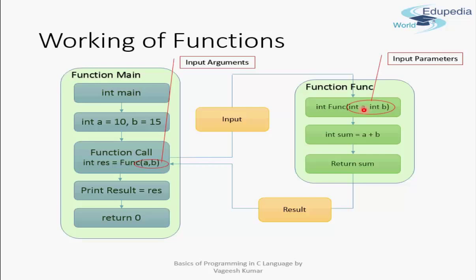This is the function definition. The input parameters are just the placeholders for your actual data to be passed to the function — the actual data passed is known as input arguments. Input parameters are the buckets, and input arguments are the water stored in those buckets. In the function definition, the names you give to inputs are input parameters; the data passed while calling the function are input arguments.